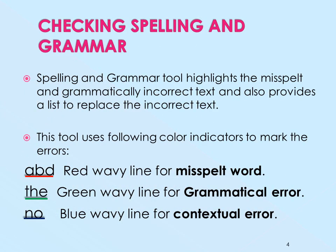Checking spelling and grammar tool. The spelling and grammar tool highlights the misspelled and grammatically incorrect text, and it also provides a list to replace the incorrect text. This tool uses color indicators to mark the errors. You may have seen wavy or zigzag lines that appear below some words that are misspelled or grammatically incorrect. For example, ABD is underlined with a red wavy line, which represents misspelled words. Green wavy lines represent grammatical errors, and blue wavy lines represent contextual errors.